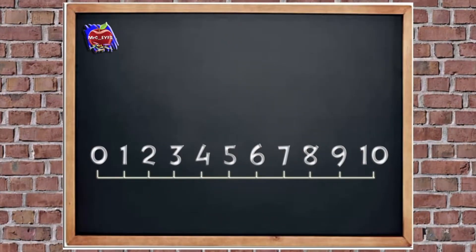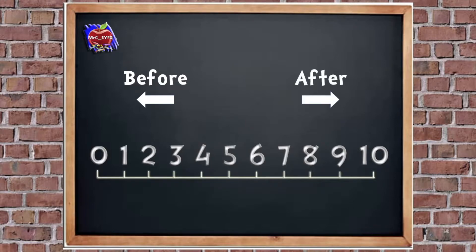Let's play a quick game to get us ready on our number line. I'm going to put a counter on a number, then I'm going to say a different number and you've got to tell me: is that number before or is it after? Before means that you have to count back to get to it, and after means we have to count forwards. So here we go — I'm going to put my counter on number five. Is number two before or after number five?